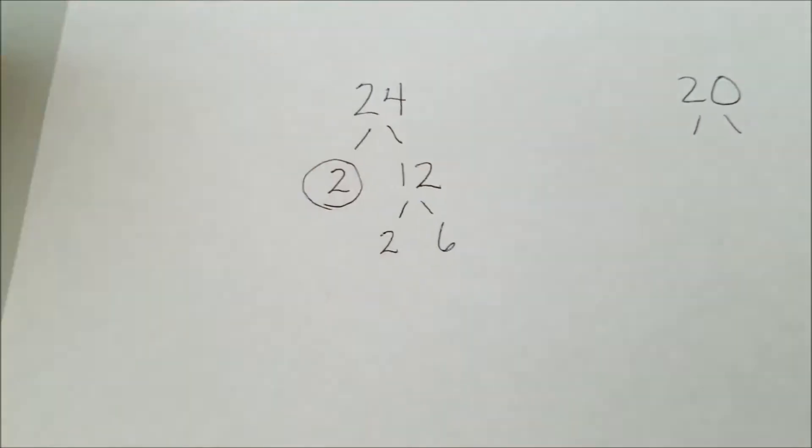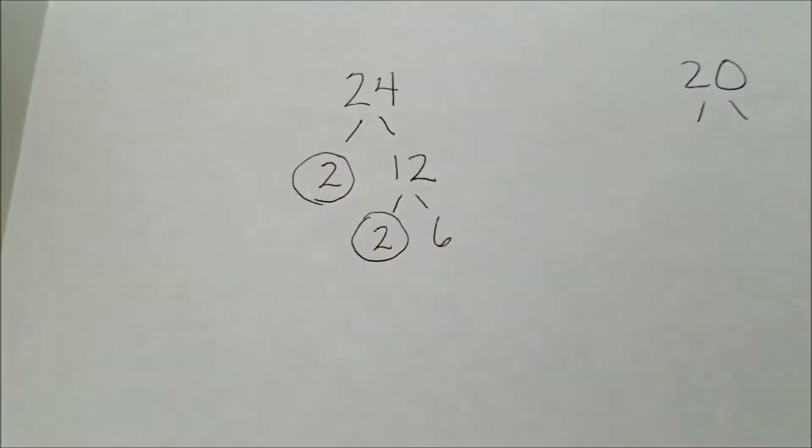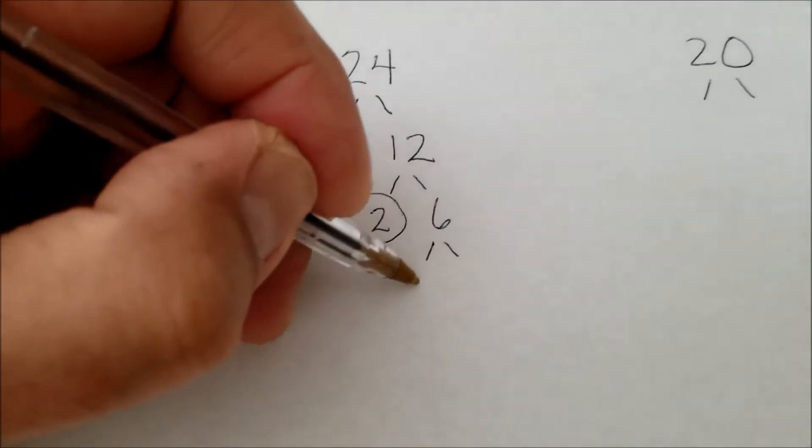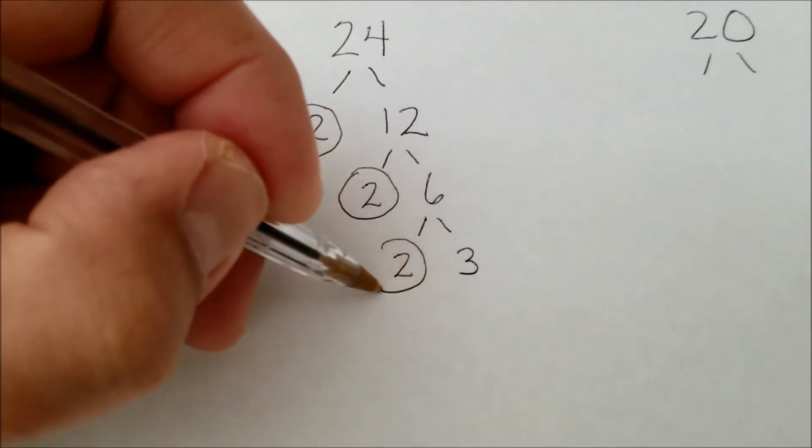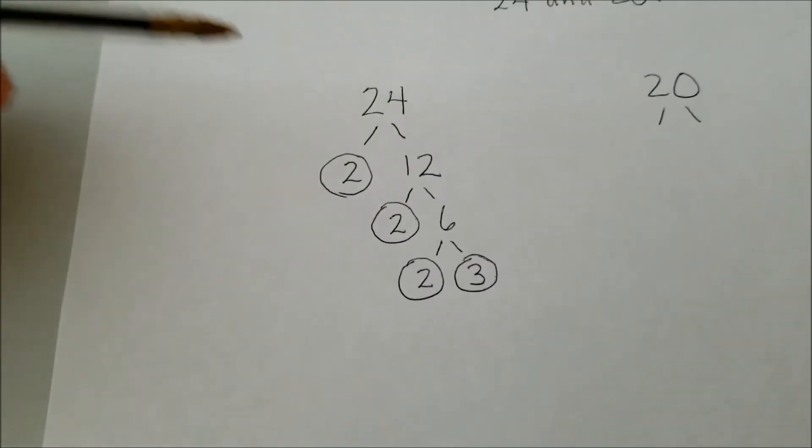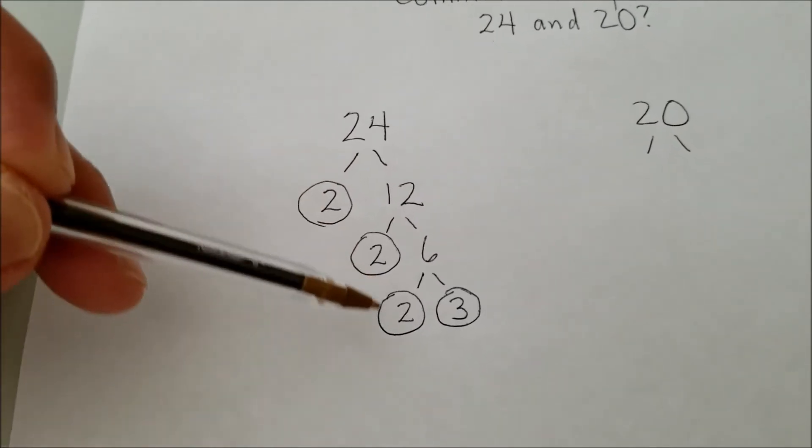That would be 2 times 6. So 2 is prime. I'm going to circle that. And then to multiply to give me 6, that would be 2 times 3. Like so. And then I'm going to circle the 2, and I'm going to circle the 3. So what I just did is I factored out 24 to get all prime numbers.